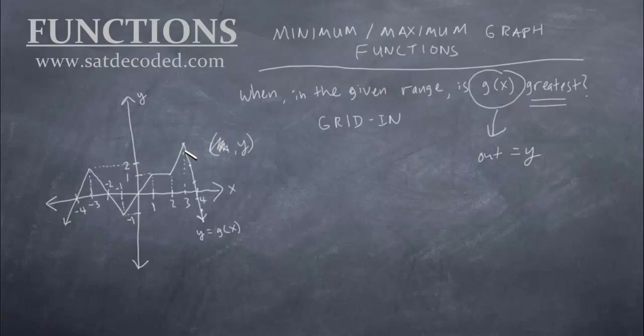Then we want to find out where it looks like it's the greatest, and it looks like the y is greatest up here. So maybe that is a 3. So when, in the given range, is g of x the greatest? Well, it's the greatest when y equals 3. So we want to look for the input corresponding to when the output is 3, and the input that corresponds with it is also 3. So our answer is f of 3 is when the y is greatest.